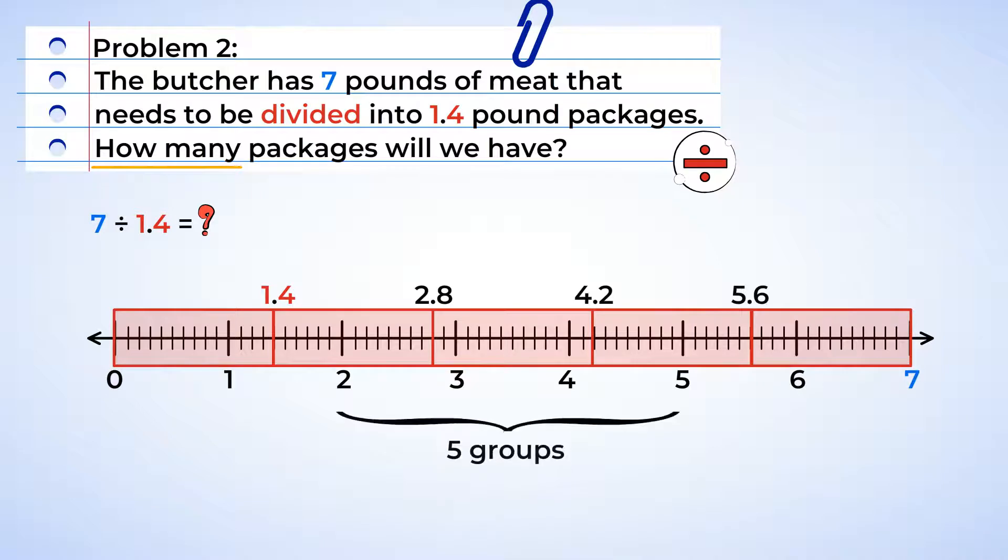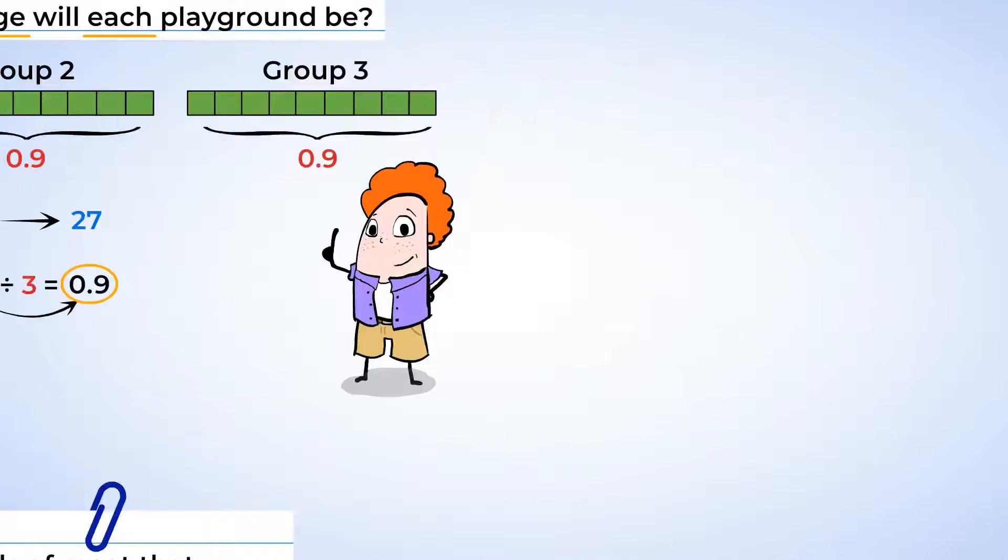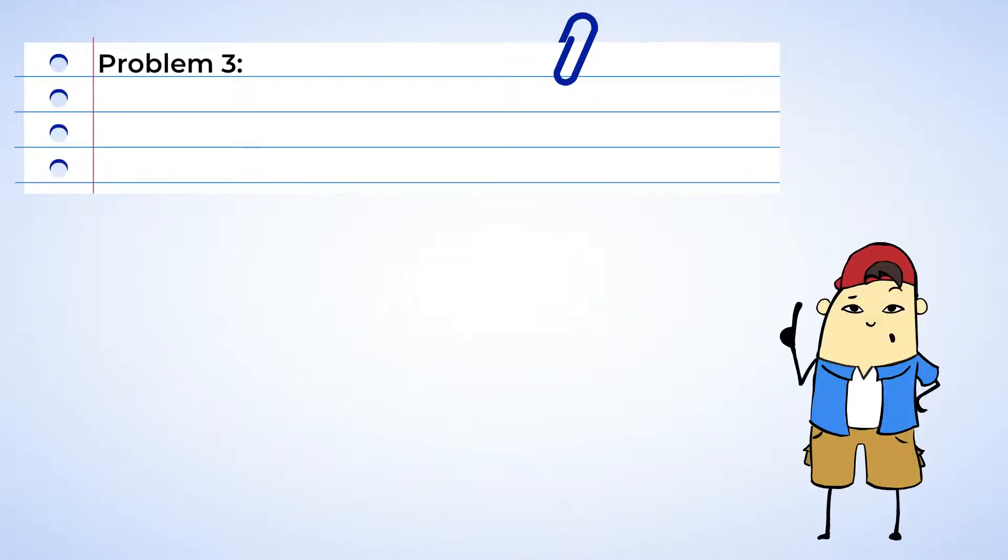Then we keep going until we get to our dividend seven. Look at that. We have five groups. So, we can make five packages out of the seven pounds of meat. All this talk about meat makes me hungry. What do you say we head over to Chen's house for lunch? He's always got the best lunch.